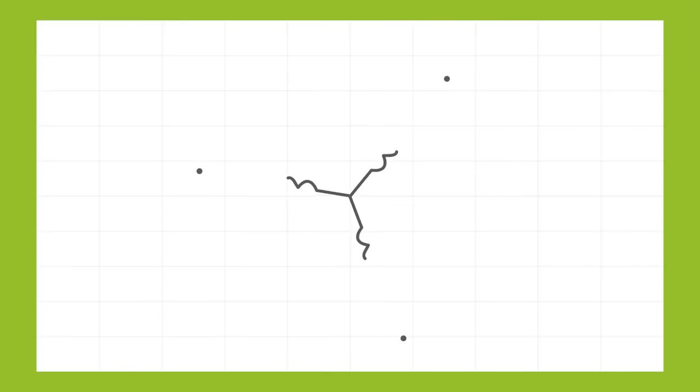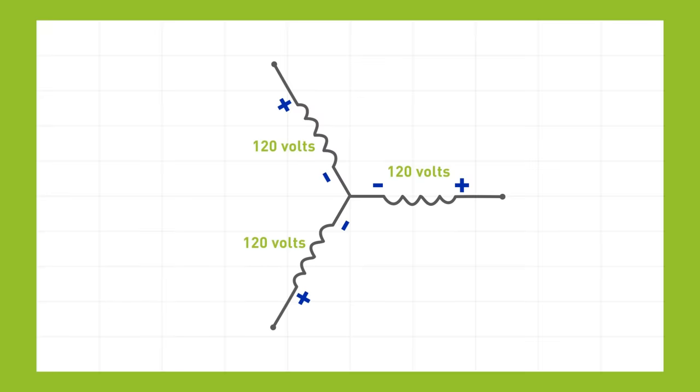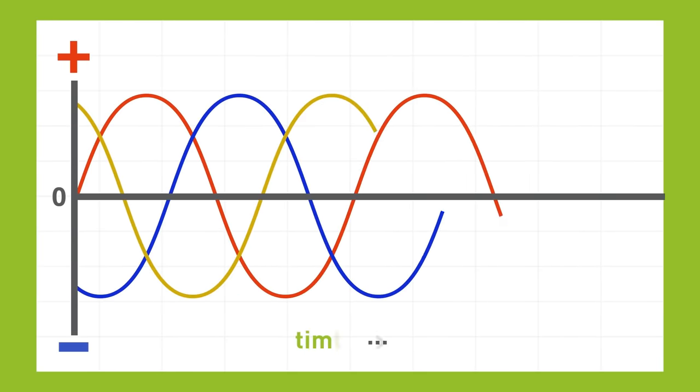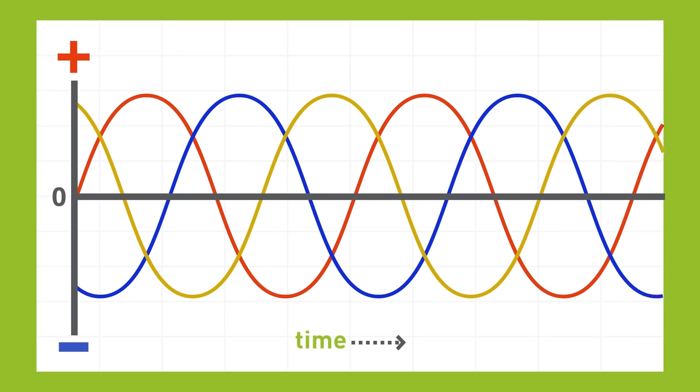As an example, let's use a three-phase 208 volt line. Each of the three lines will be carrying 120 volts. If you look at the chart, you can easily see the power output of any two lines.